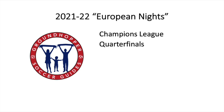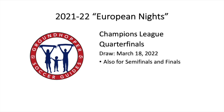That gets us to the quarterfinals. The draw for the quarterfinals is March 18th, 2022. They're doing something different now — the draw for the quarterfinals, semifinals, and finals all happens on March 18th. So from this point on there's kind of a bracket, and you'll know who you're going to play if you win in the quarterfinals and semifinals.